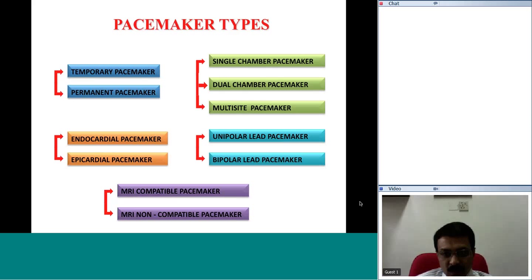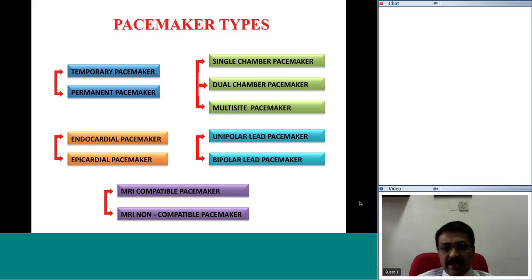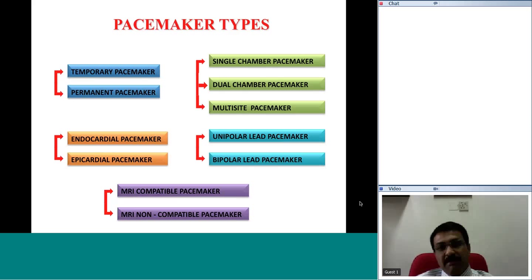If the pacemaker uses a bipolar lead, it would be called a bipolar lead pacemaker. Unlike a bipolar lead, a unipolar lead has only one electrode located at the distal tip which acts as the cathode, and the generator acts as the anode — so the circuit is much bigger, encompassing a larger area. In a bipolar lead, because the electrodes are placed nearer to each other, the circuit is closer. A pacemaker can thus be described as a unipolar or bipolar lead pacemaker depending on where the electrodes are placed.